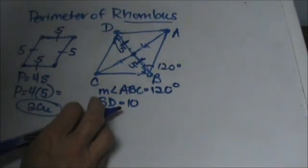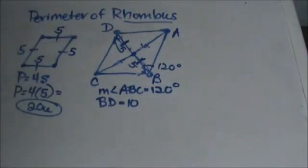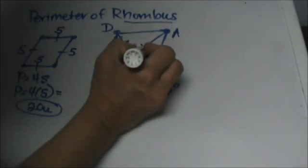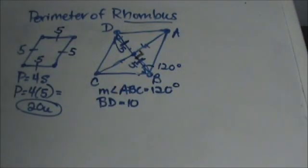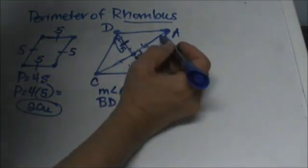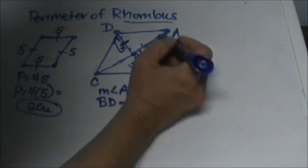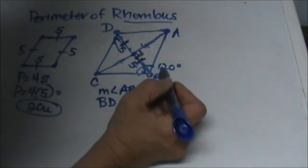But a second characteristic of a rhombus is that the diagonals are perpendicular to each other. So they cross at right angles right here so I can draw a right angle in. So I have a right triangle right here where I know this angle is 120.